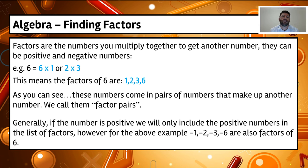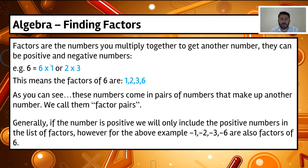So let's have a look at what factors are. Basically, factors are the numbers that you multiply together to get another number. These numbers can be positive or negative. If you have a look at the example, the factors of 6 — when we multiply numbers together we get 6 times 1, and 2 times 3. This means that the factors of 6 are 1, 2, 3, and 6.